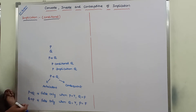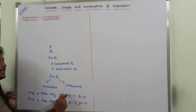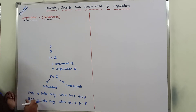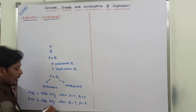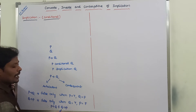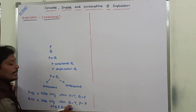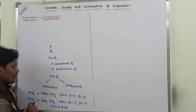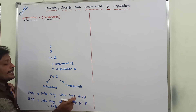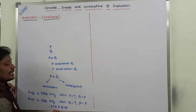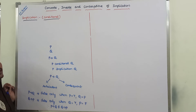In the remaining cases among the four possible cases, P conditional Q is true and Q conditional P is true. Hence, we can say that P conditional Q is not equal to Q conditional P. Because when P is true and Q is false, P conditional Q is false; and when Q is true and P is false, Q conditional P is false. Both are different, so P conditional Q is not equal to Q conditional P.